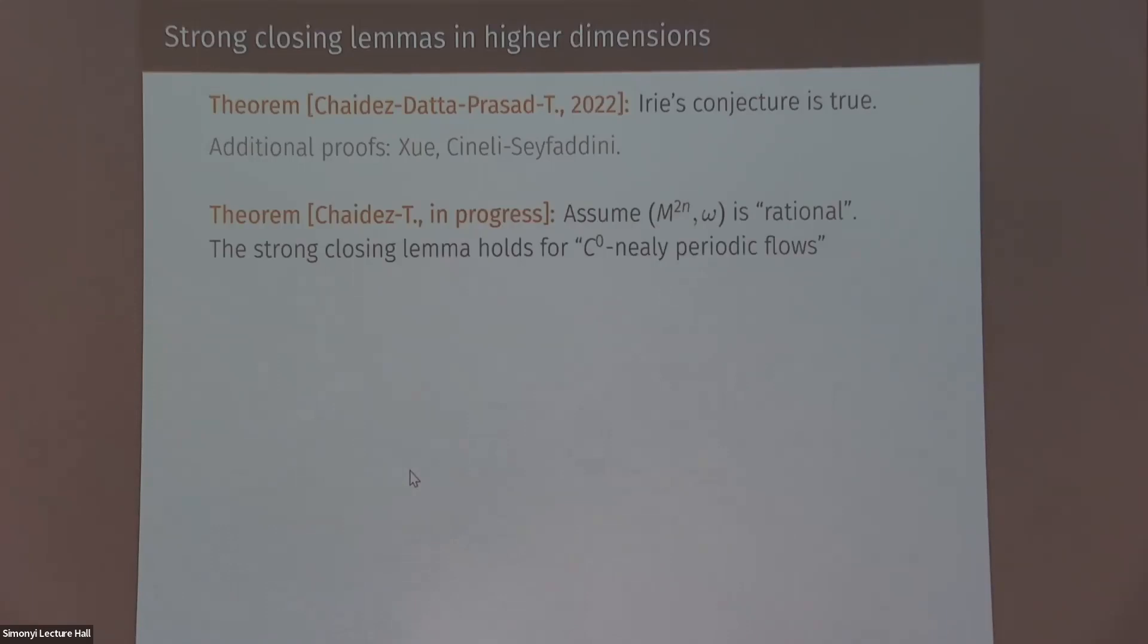So in a joint work in progress with Chaidez, we proved the following statement. So assume the symplectic manifold is something that is called rational. I will say what it is in a moment. Then we prove a strong closing lemma for flows that are C0 nearly periodic. So I will say what both of these things are. So starting with rational. Formally, it means that the differential form omega represents a rational cohomology class. But that's not what's important to know about it. What's important to know about this condition is that it holds trivially in dimension two, and it does not hold in Herman's counterexample. So if you try to change Herman's counterexample, like if you would take something similar to this thing, but with a rational class, then it would not be a counterexample.